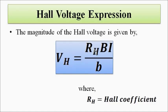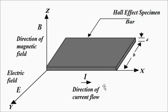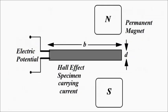Here, V_H is the Hall Voltage induced because of the Hall Effect phenomenon. R_H is the Hall Coefficient. Capital B is the magnetic field strength. I is the current flow taking place in the specimen or the bar. And small b is the specimen width. These are the factors that govern the magnitude of the electric potential.